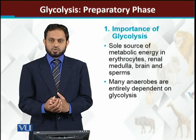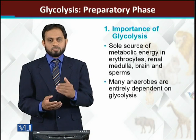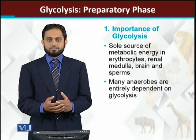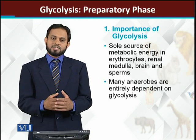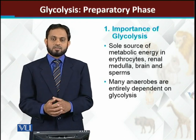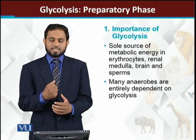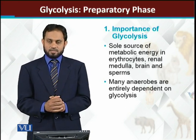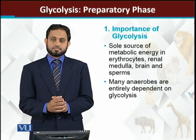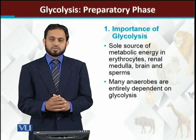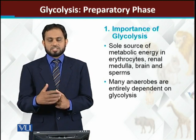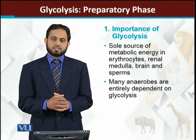Red blood cells کے علاوہ aerobic respiration available نہیں۔ Similarly, the renal medulla cells — kidney کا cortex اور medulla دو parts ہیں — kidney کے medullary region کے جو cells ہیں they also utilize the glycolysis process for harvesting energy, for getting ATP۔ Similarly, the brain cells are also utilizing glucose molecules for harvesting energy۔